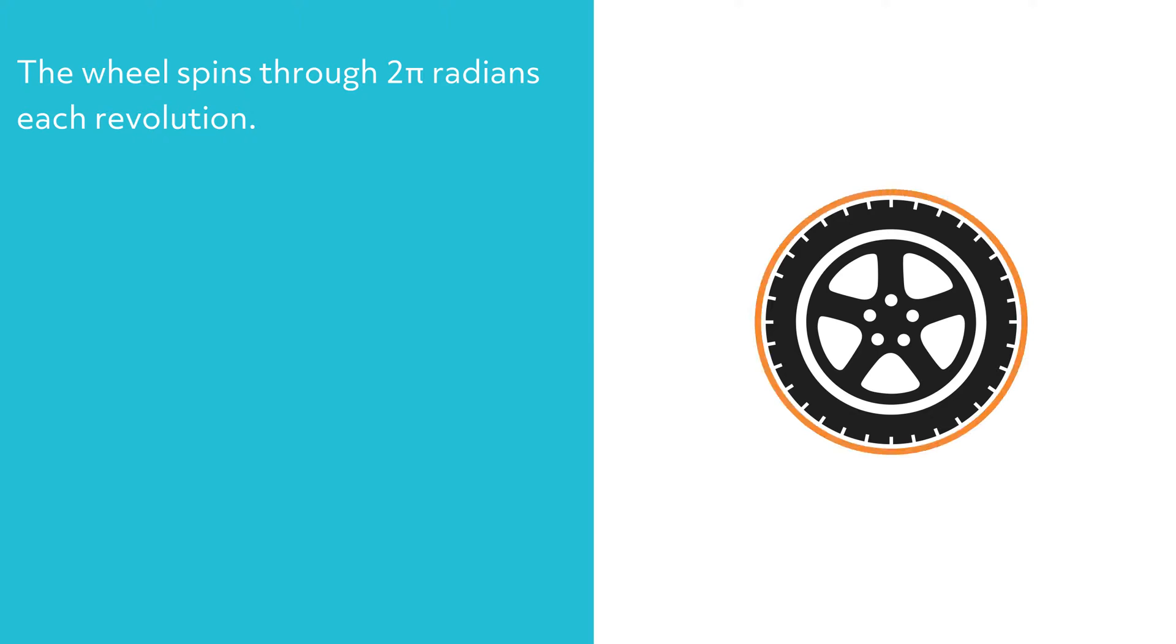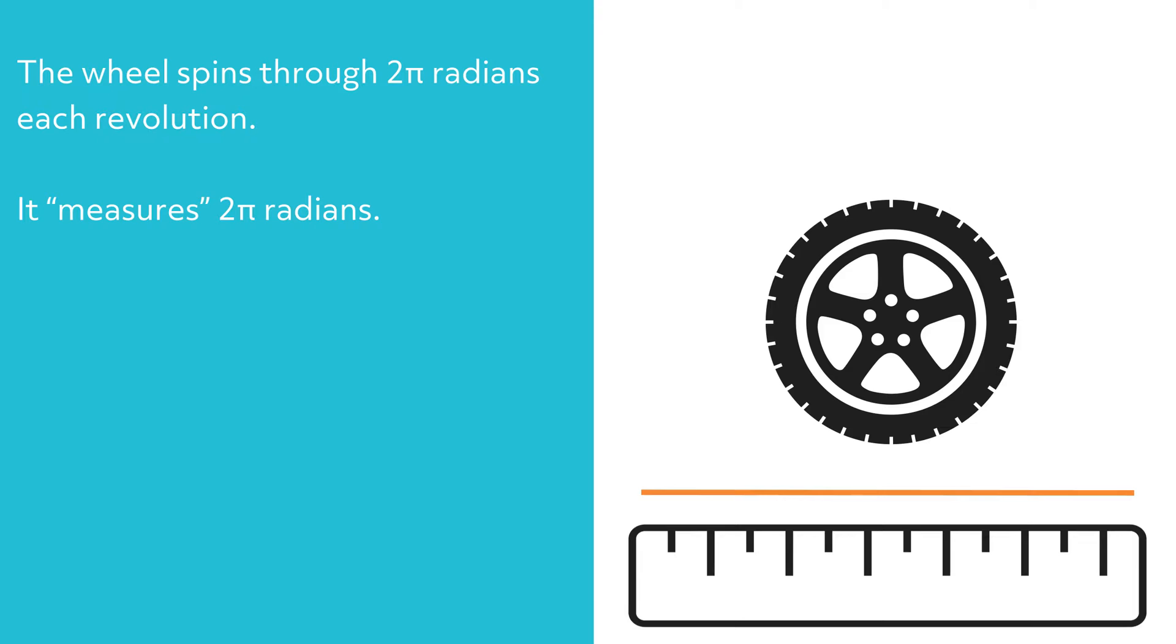Imagine wrapping our wheel with a piece of string. This string makes one revolution around our wheel. It measures 2 pi radians. Now, let's take that piece of string, lay it flat, and measure its length with a ruler. We will find the length is 2 pi r meters.